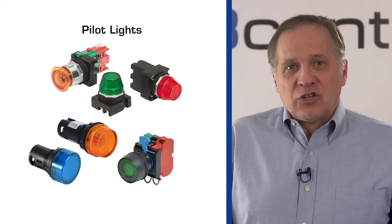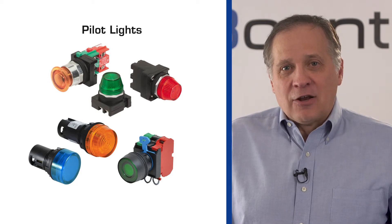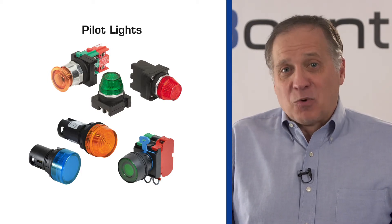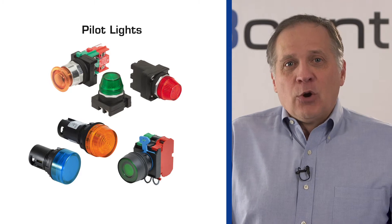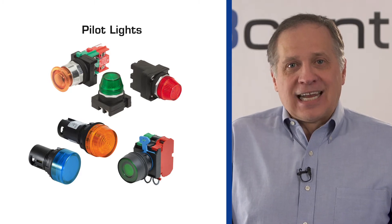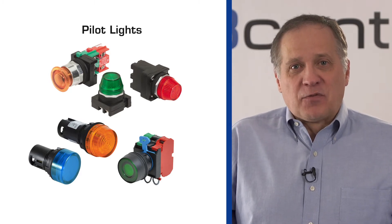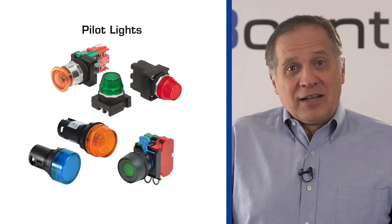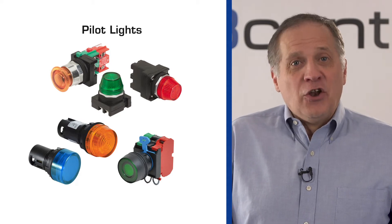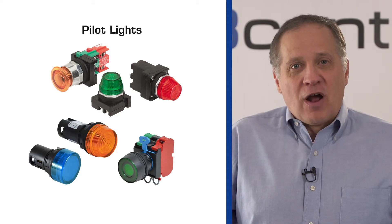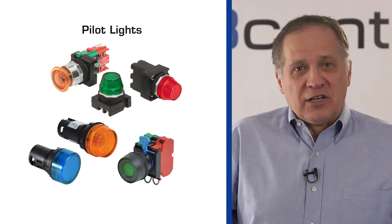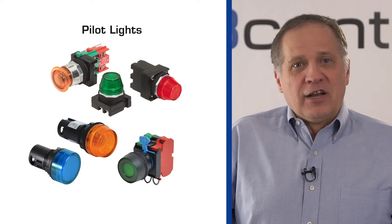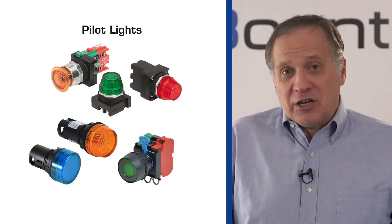An indicator light is equipped with an incandescent lamp or LED and is mainly used in automated instruments, condition panels, and dashboards. Relampable pilot lights feature a lens that can be replaced from the front of the device when they stop functioning. Non-relampable pilot lights are offered as one-piece devices with a fixed lens, meaning the whole indicator needs to be replaced if the light stops functioning.